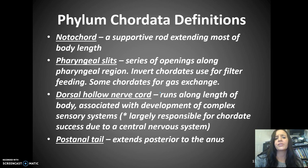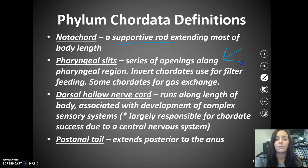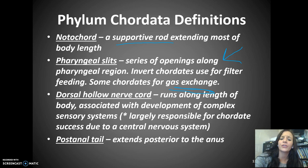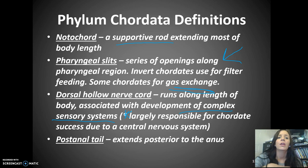Here are definitions for phylum Chordata you need to know. The notochord is a supportive rod that extends most of the body length. Pharyngeal slits are openings along the pharyngeal region — invertebrate chordates use them for filter feeding, while some chordates use them for gas exchange, though they don't persist throughout a chordate's lifetime. The dorsal hollow nerve cord runs along the length of the body and is associated with complex sensory systems — it is largely responsible for chordate success, giving us a central nervous system, sensory features, and well-developed brains.